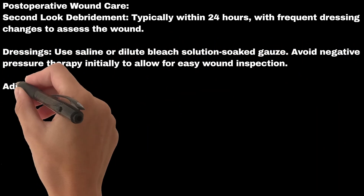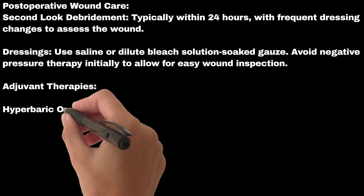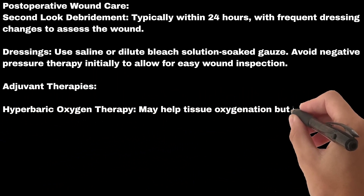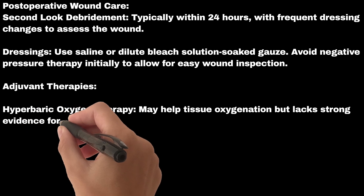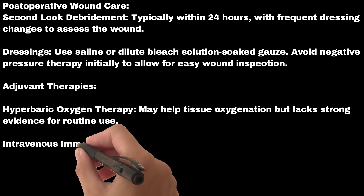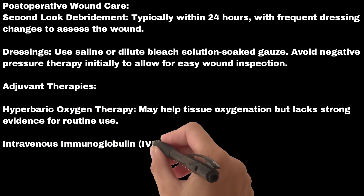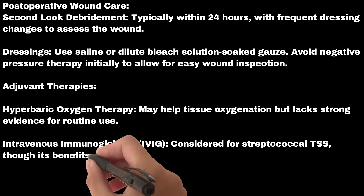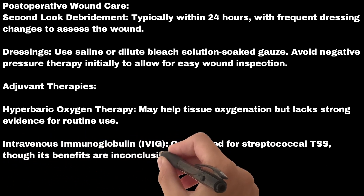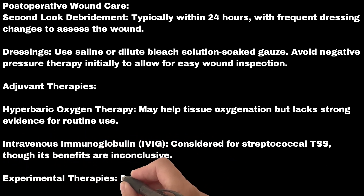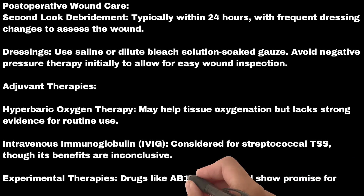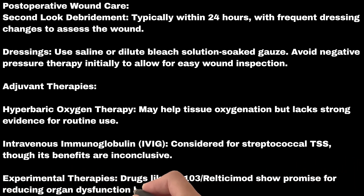Adjuvant therapies: Hyperbaric oxygen therapy may help tissue oxygenation but lacks strong evidence for routine use. Intravenous immunoglobulin (IVIG) is considered for streptococcal TSS, though its benefits are inconclusive. Experimental therapies such as AB-103 (Reltecimod) show promise for reducing organ dysfunction but are not yet FDA approved.